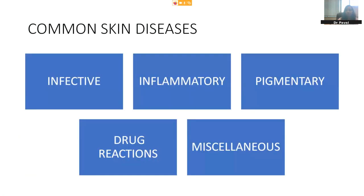Like all the medical conditions, the common skin diseases can be classified into infective — which consists of bacterial, fungal, viral and parasitic infestations — and inflammatory conditions, which also mostly are autoimmune conditions that we see in dermatology. Then there are disorders of pigmentation, both hyper and hypopigmentation and depigmentation. We also see a lot of cutaneous adverse drug reactions. And then there are miscellaneous skin disorders that we will talk about.